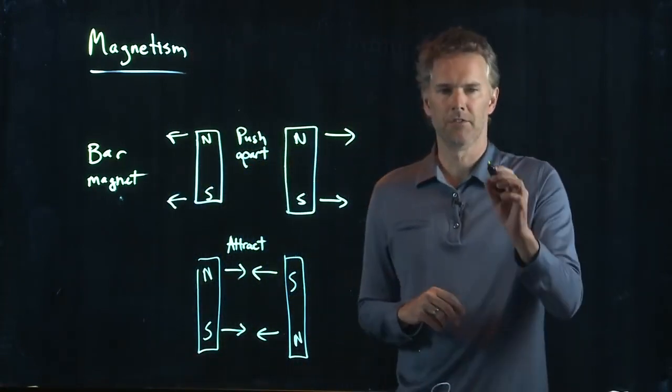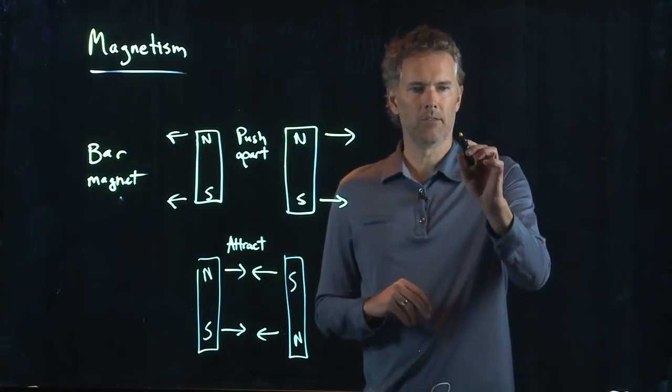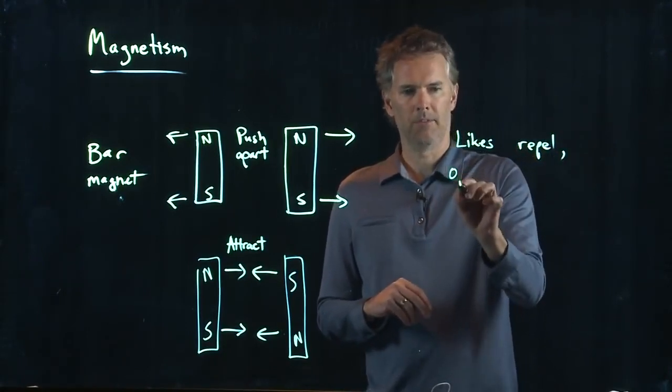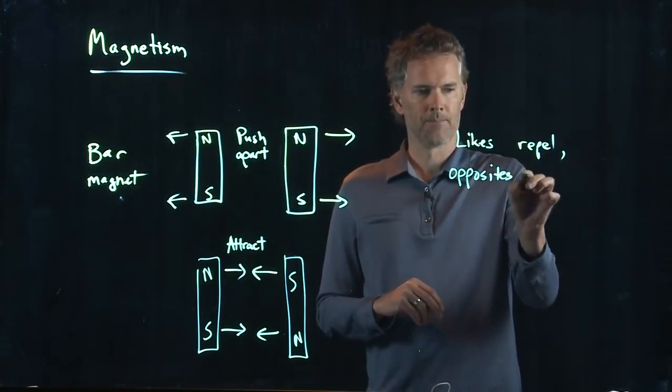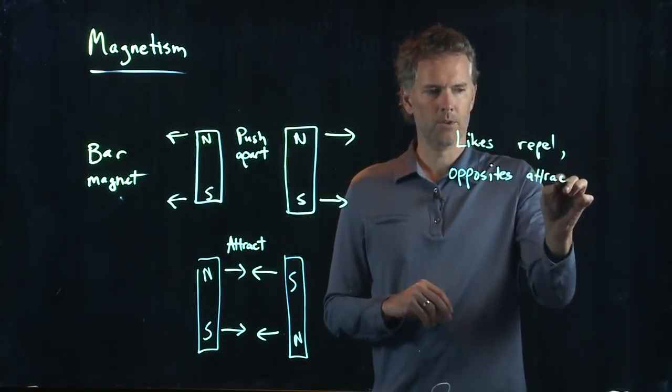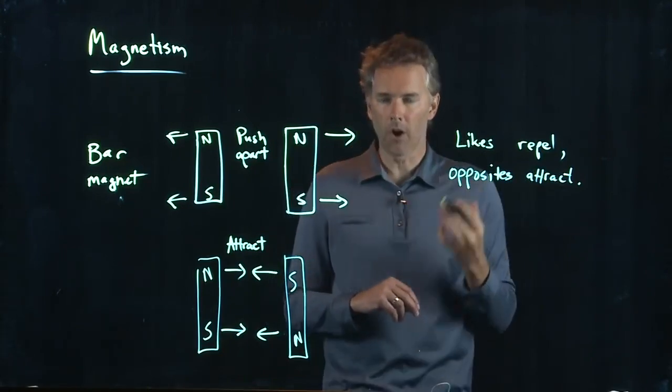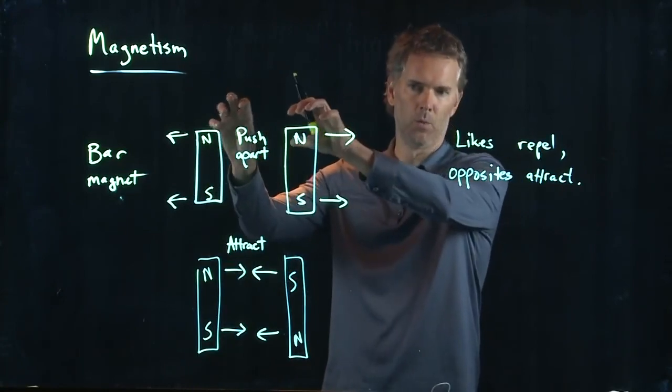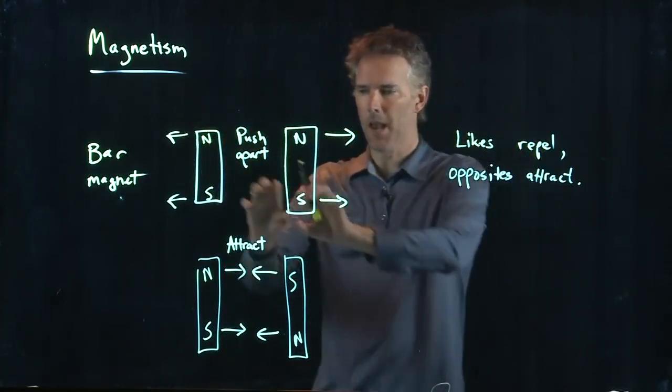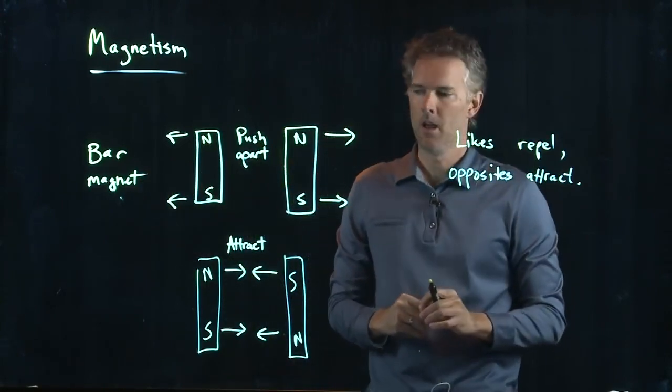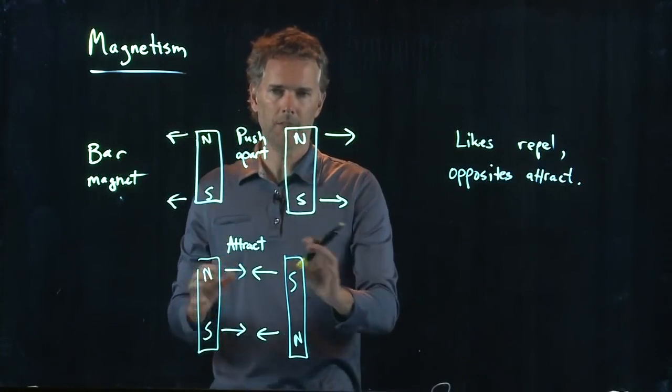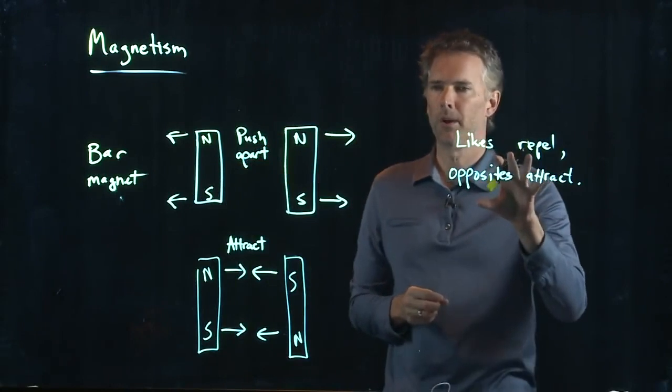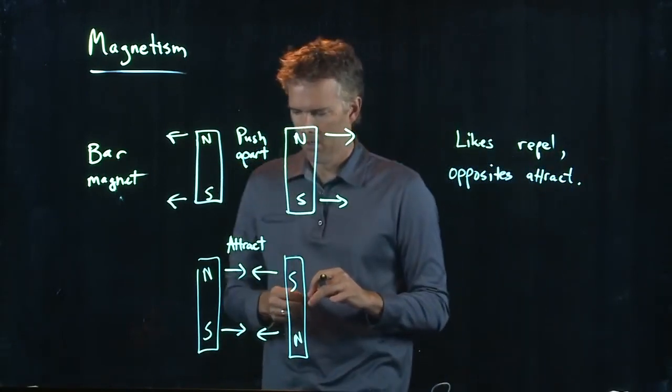And so, this is a statement that we talked about yesterday. With magnetism, likes, repel. Opposites, attract. Which is very consistent with what we have already been talking about with electrostatics. Positives, repel each other. Those would be likes. Negatives, repel each other. Okay? But, opposites attract. If I had a positive and a negative, they would attract. If I had a negative and a positive, they would attract. So, likes repel, and opposites attract. Okay.